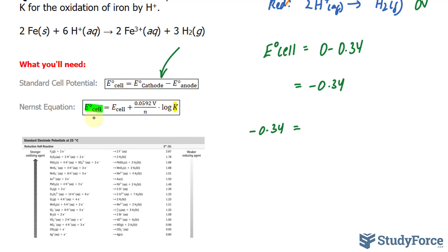That's equal to 0. E cell is 0 because we're at standard conditions here, nothing has changed. And the rest is 0.0592 per N,